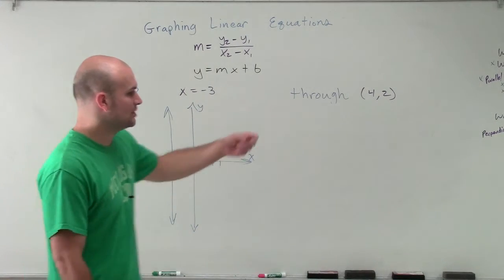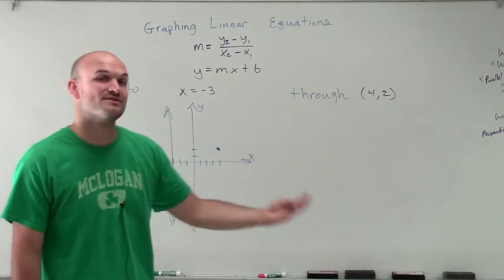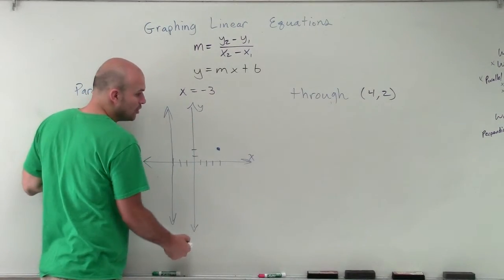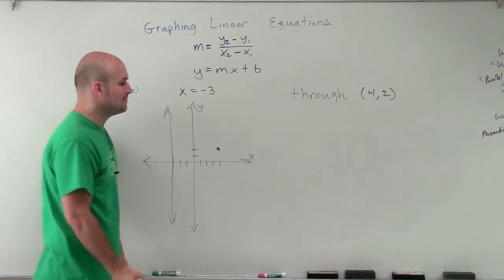So if I had a slope of 1 half, then my new equation has to have a slope of 1 half. If I have a slope of 0, my new equation has to have a slope of 0. If I have an undefined slope, my new equation has to have an undefined slope if they are going to be parallel.